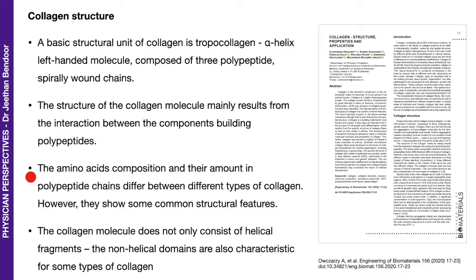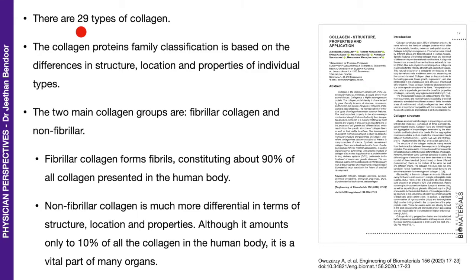The amino acid composition and the amount in polypeptide chains differ between different types of collagen. The collagen molecule does not only consist of helical fragments; non-helical domains are also characteristic of some types of collagen. There are 29 types of collagen, and the collagen protein family classification is based on differences in structure, location and properties of individual types.